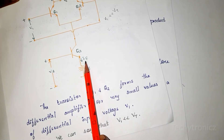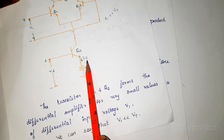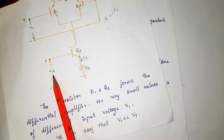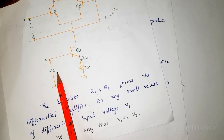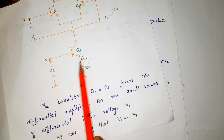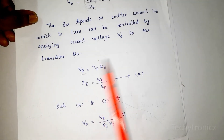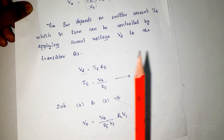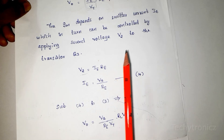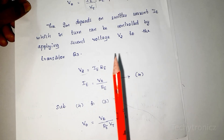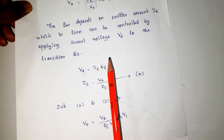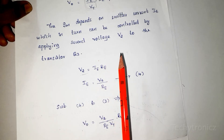The gm value depends on the emitter current IE, and the emitter current depends on the second input voltage V2. The second input voltage V2 equals IE times RE, so V2 is equal to IE times RE. The transconductance depends on the emitter current IE, which is controlled by the second input voltage V2.